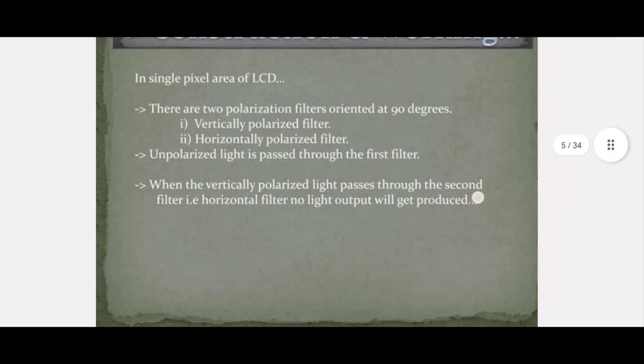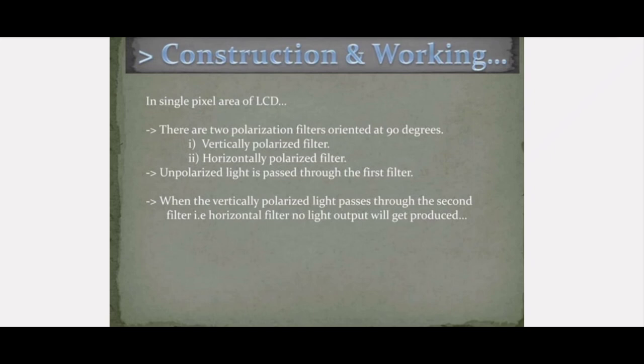Let us see about construction and working. The LCD has two filters: one is a vertically polarized filter and another one is a horizontally polarized filter. In the vertically polarized filter, unpolarized light is passed. The vertically polarized filter will produce polarized light from the unpolarized light.